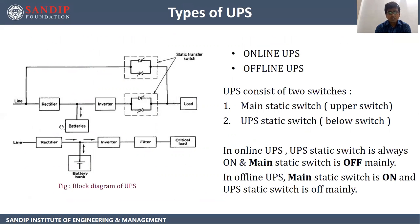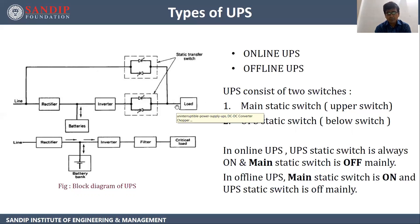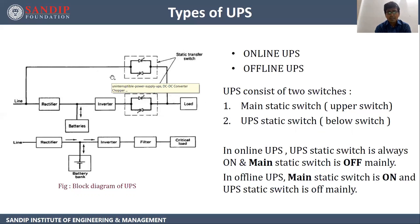That DC is going to be stored in these batteries. Simultaneously, this DC is directly fed to the inverter or through this battery, and this inverter will convert the DC into AC. Now there are two switches — one is the main static switch which is the upper one, and the UPS static switch which is the lower one. If the lower switch is on, this AC produced by the inverter is fed to the load. If the UPS static switch is on, then the main static switch will be off. In case the UPS static switch is off, then the main static switch will be on, and directly the line supply is fed to the load.